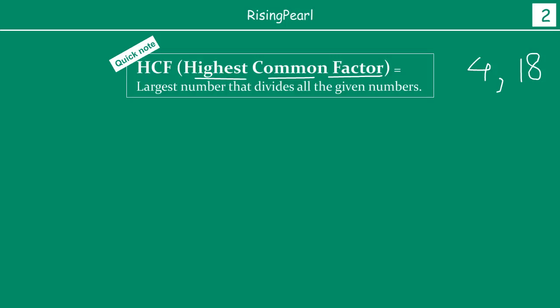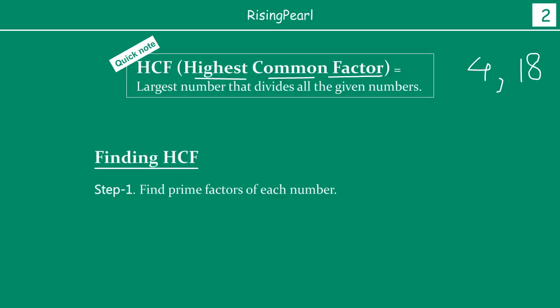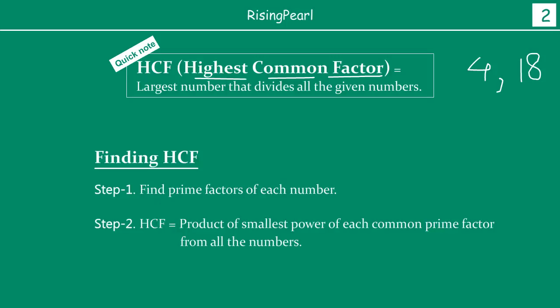So how do we actually find out the HCF? The first step is to find the prime factors of each of the given numbers. And secondly, the HCF will be equal to the product of the smallest power of each common prime factor from all the numbers.